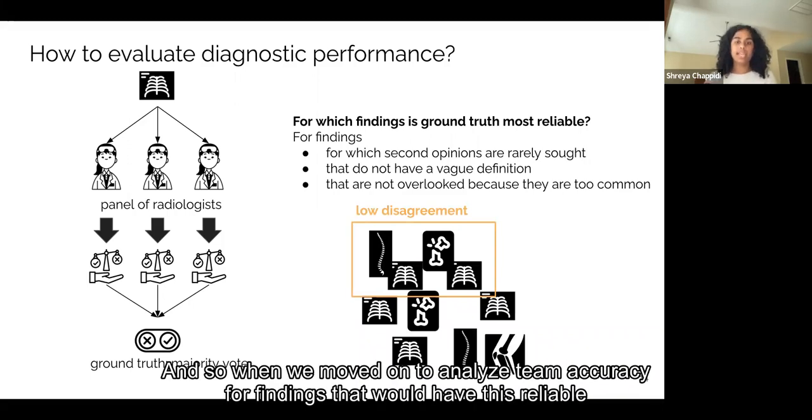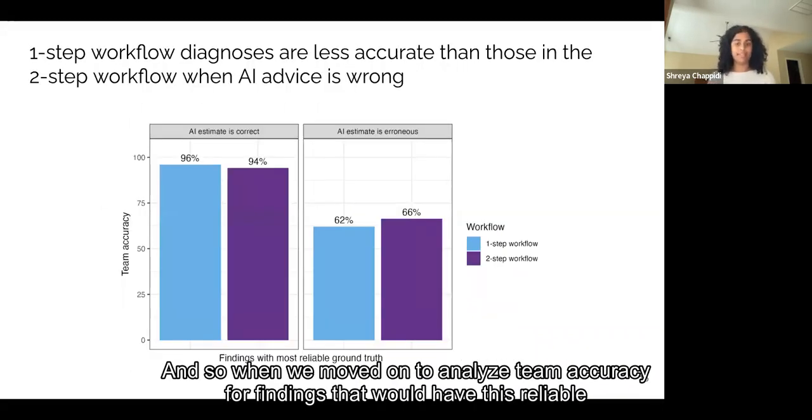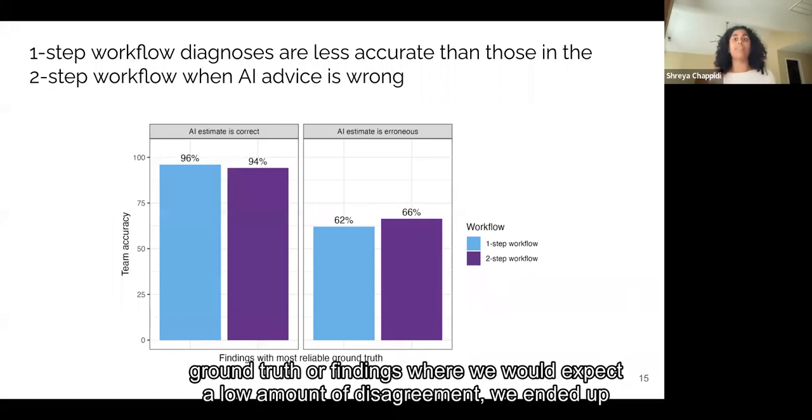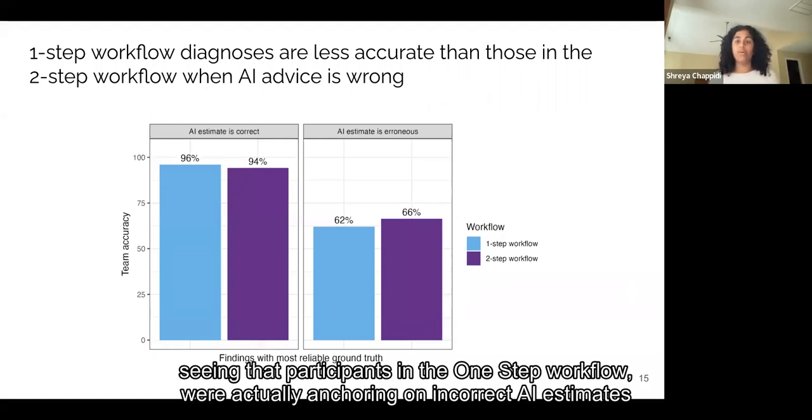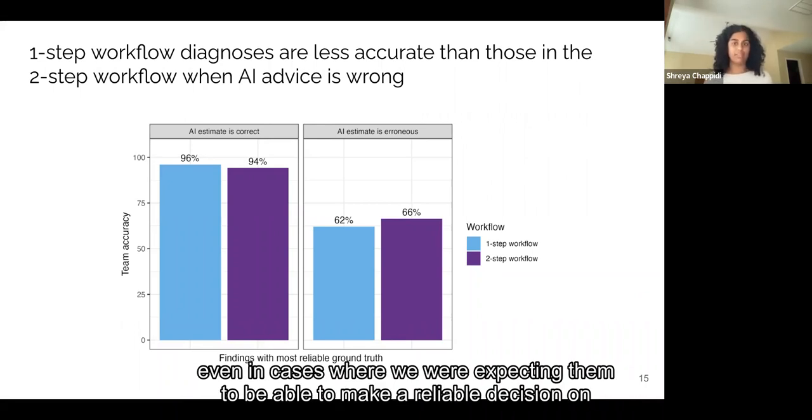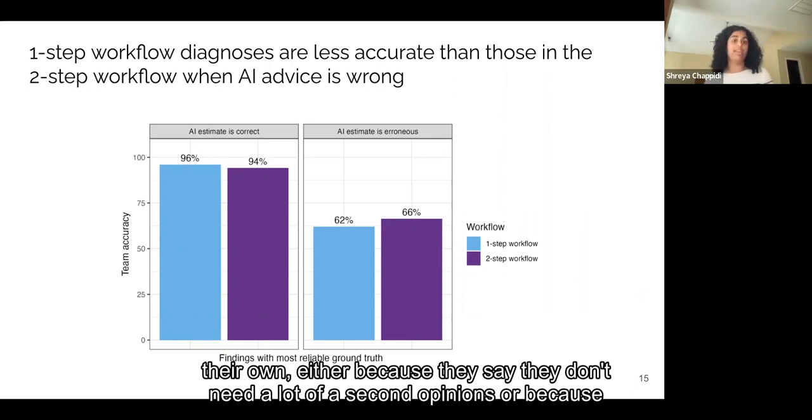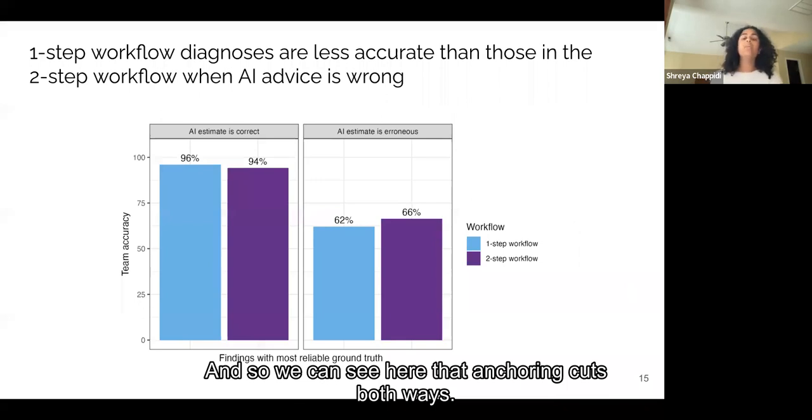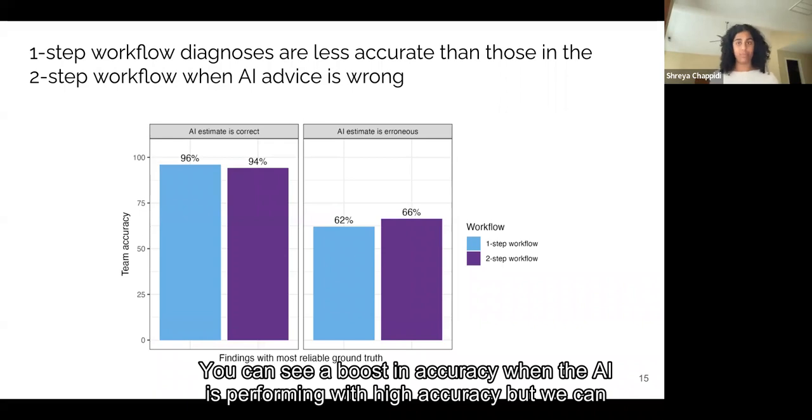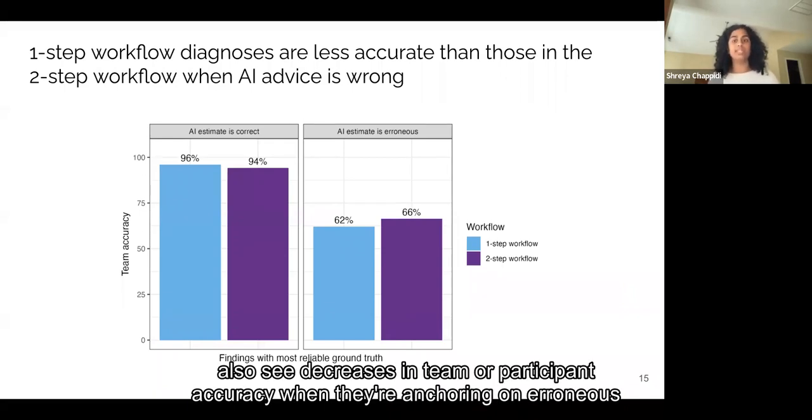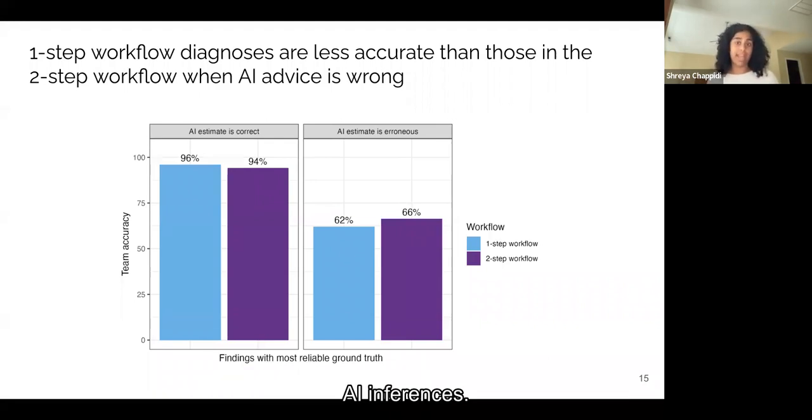And so when we moved on to analyze team accuracy for findings that would have this reliable ground truth or findings where we would expect a low amount of disagreement, we ended up seeing that participants in the one-step workflow were actually anchoring on incorrect AI estimates, even in cases where we were expecting them to be able to make a reliable decision on their own, either because they say they don't need a lot of second opinions or because the finding is well-defined. And so we can see here that anchoring cuts both ways. You can see a boost in accuracy when the AI is performing with high accuracy, but we can also see decreases in team or participant accuracy when they're anchoring on erroneous AI inferences.